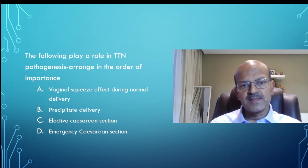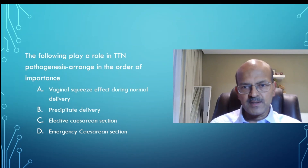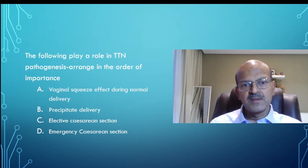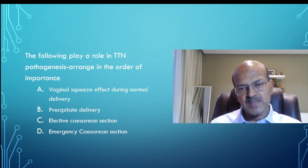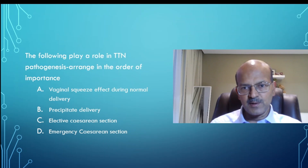This leads to transient tachypnea of the newborn, or wet lung. If you look at these causes, elective cesarean section is a cesarean delivery where there is no onset of labor — the baby comes out all of a sudden — and this is the most likely to lead to transient tachypnea of the newborn, so this will be the first one. The second would be precipitate delivery or emergency cesarean section, depending on whether the labor process has started in either of them, and you could choose between either of these two.